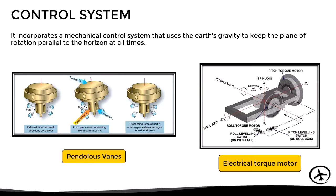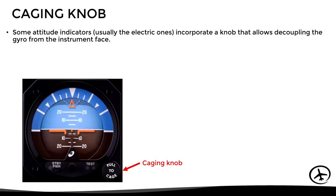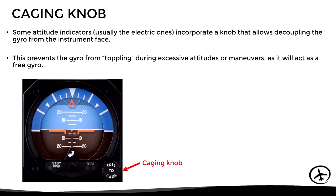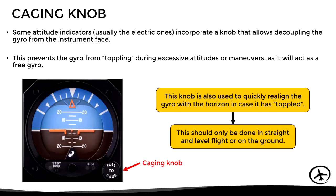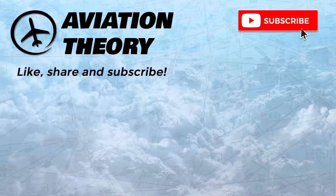Some electrically driven attitude indicators incorporate a caging knob that decouples the gyro from the instrument face. This prevents the gyro from toppling during excessive attitudes or maneuvers, as it acts as a free gyro without mechanical stops. The caging knob is also used to quickly realign the gyro with the horizon if it has toppled, though this should only be done in straight and level flight or on the ground to ensure adequate alignment.